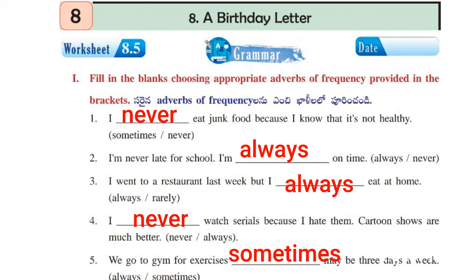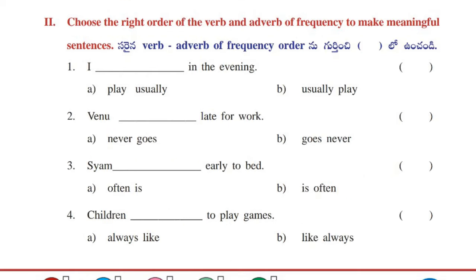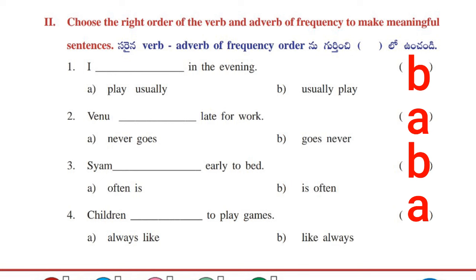Let's move on to the second roman. Here we have to choose the correct options. First: I dash in the evening — I usually play in the evening. Next: Venu dash late for work — Venu never goes late for work. Next: Sam dash early to bed — it's often. Fourth one: Children dash to play games — always like.